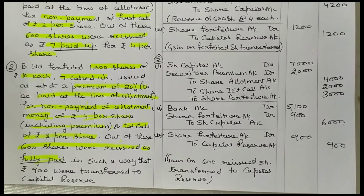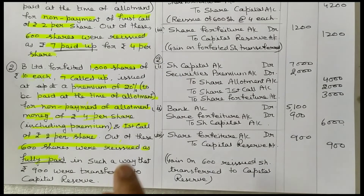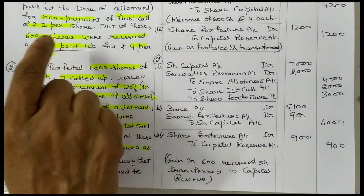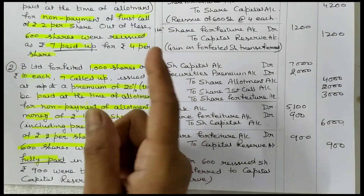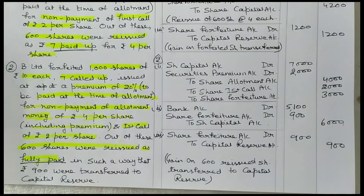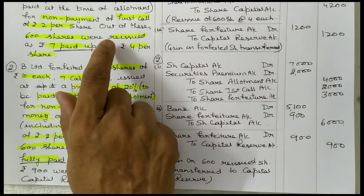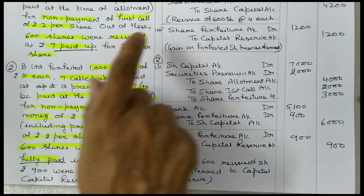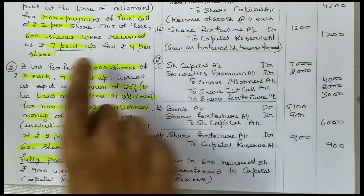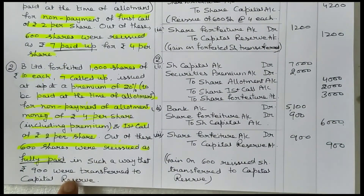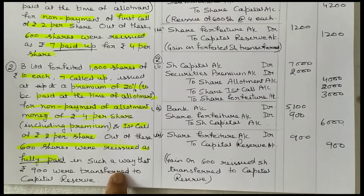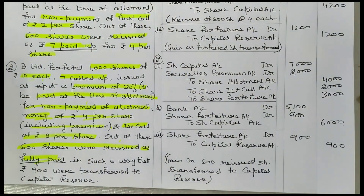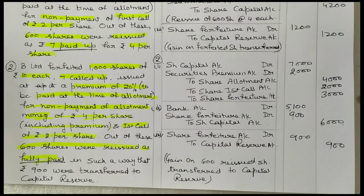That is all for today's video. In these two examples I showed the difference: when allotment money is not received including premium versus when allotment money has been received including premium. Also, in example one the paid up amount is only ₹7, while in example two it is fully paid up. Be careful while reading the question. Bye bye.